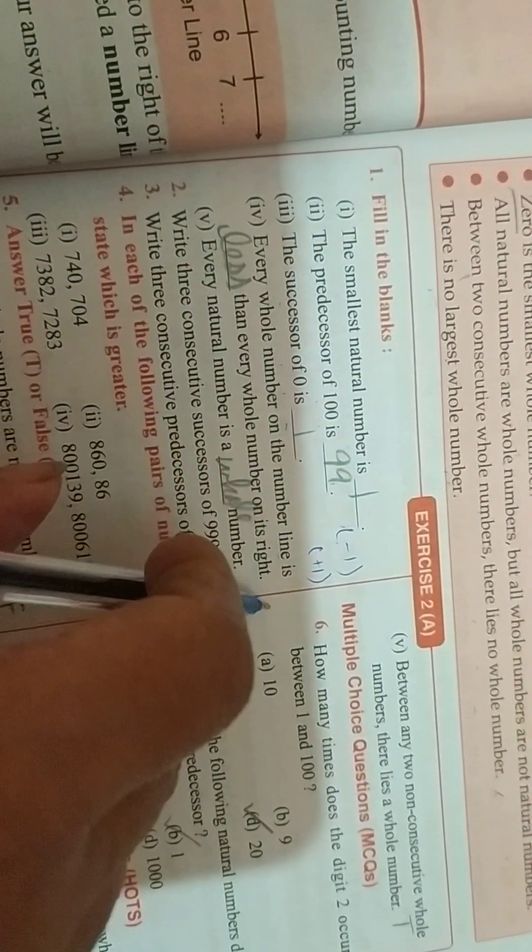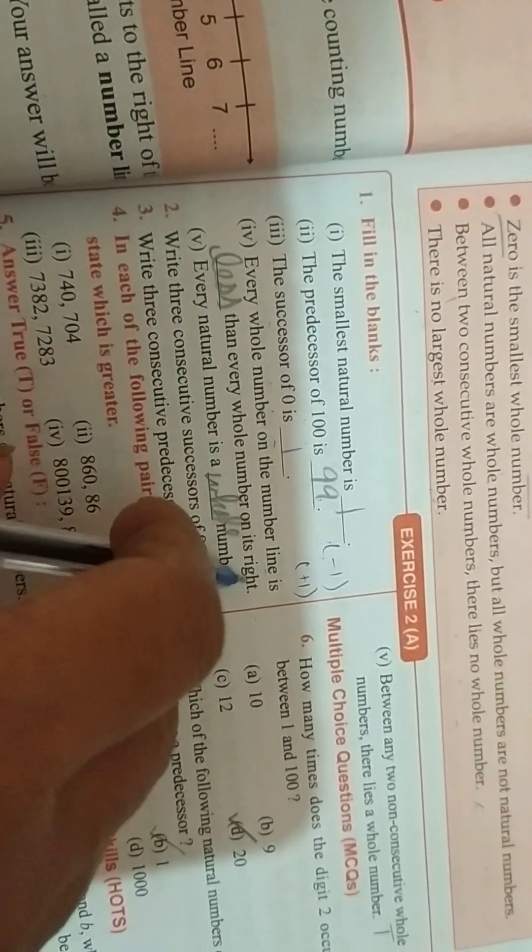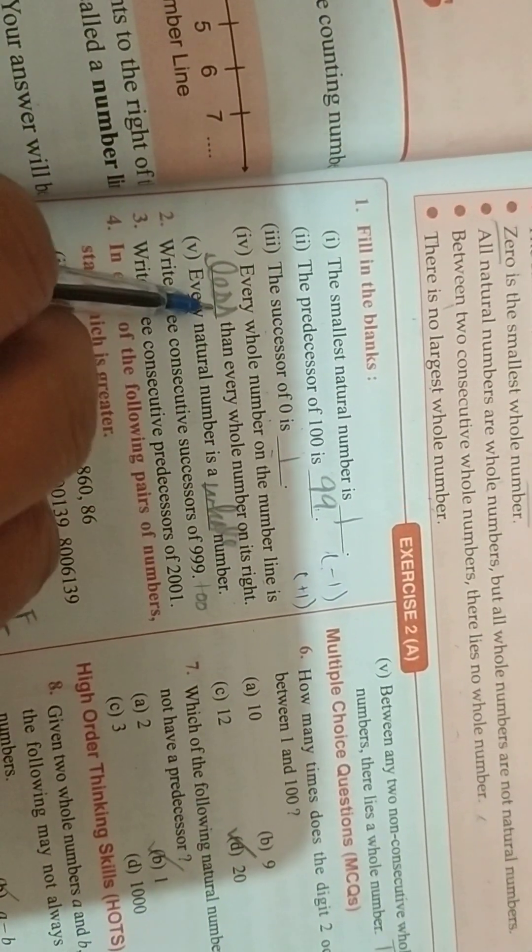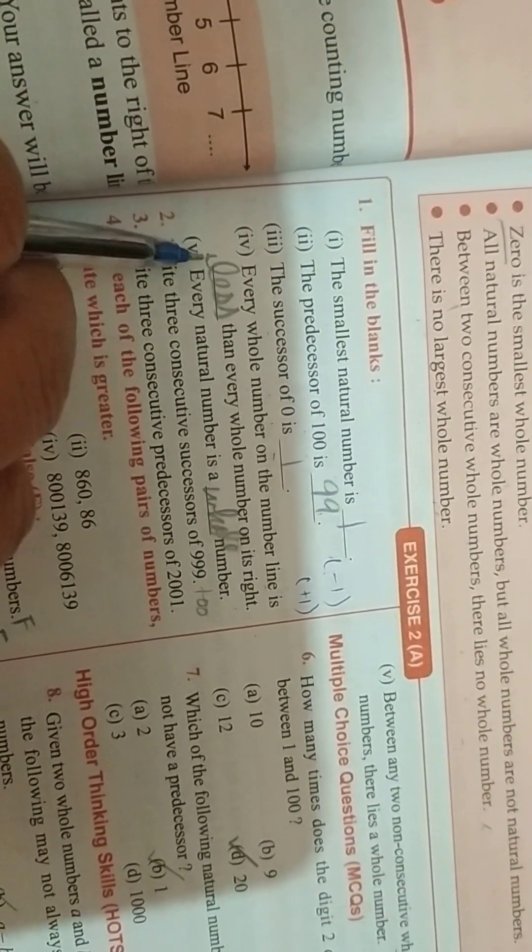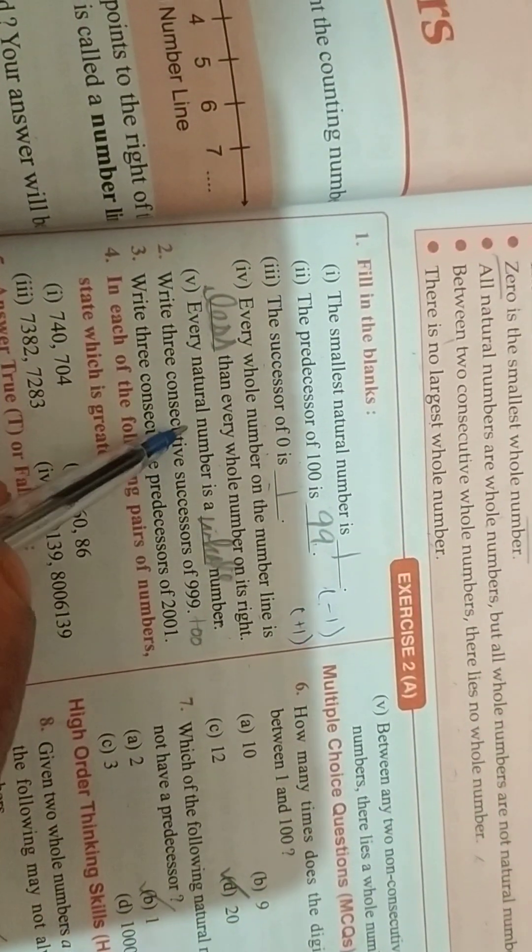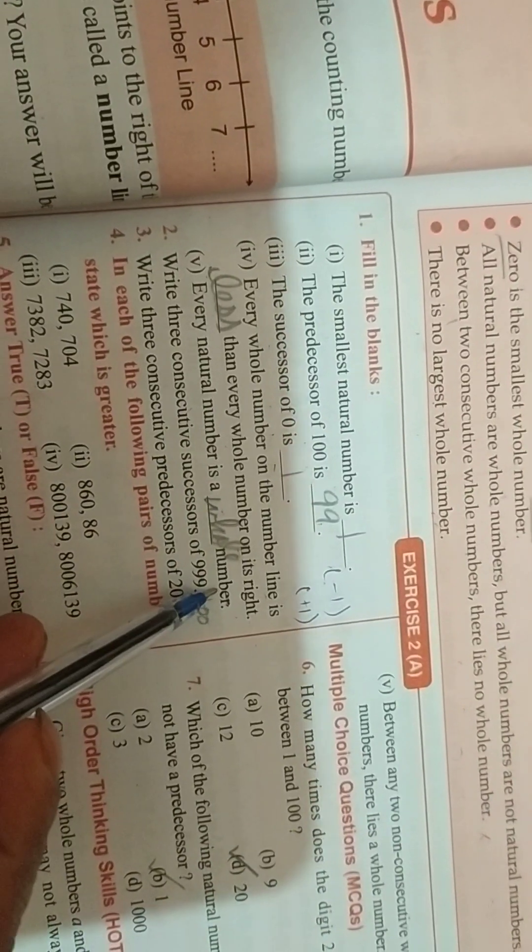Every whole number on the number line is less than every whole number on its right side. So you can say on the line, it is always less than every whole number on the right. And on the right side, it is greater. Every natural is a whole.